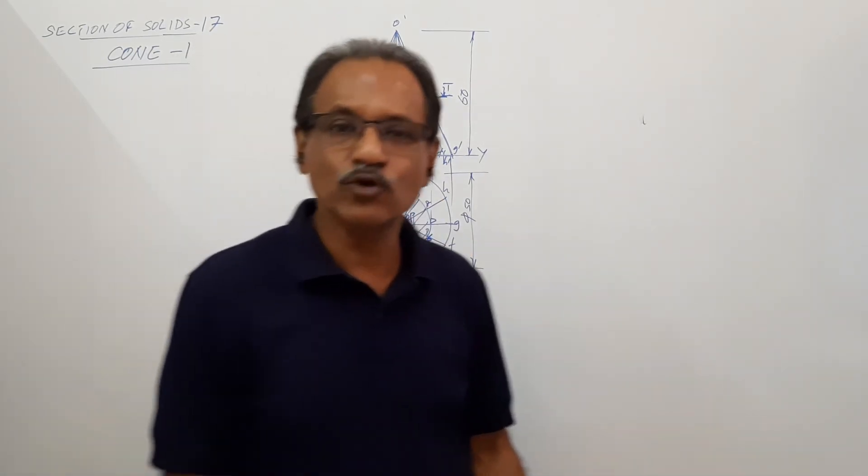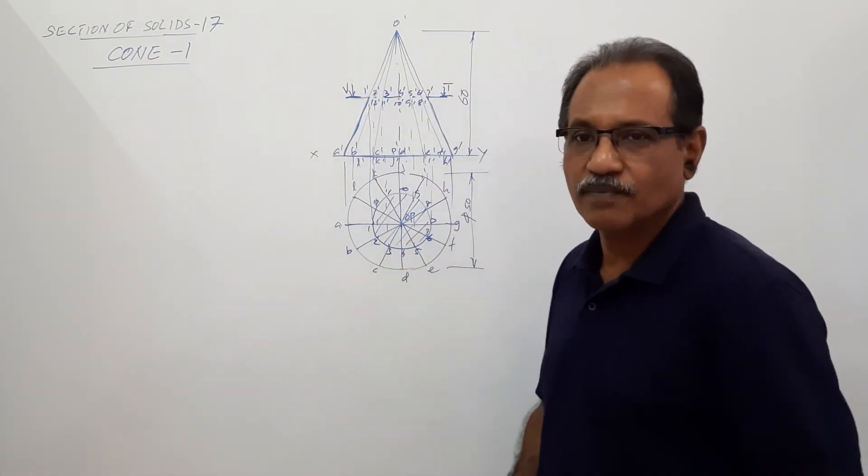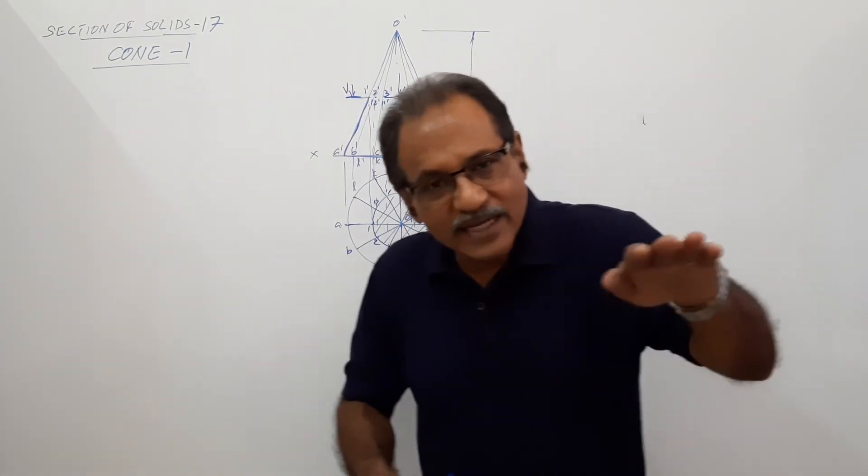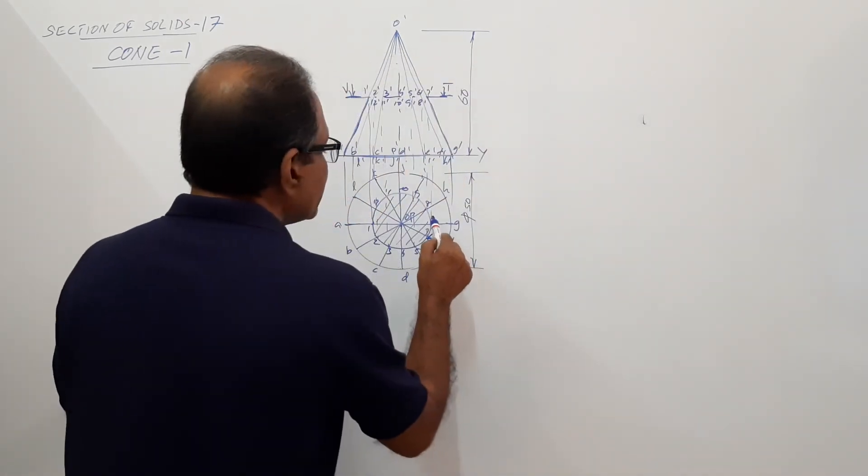So to ensure that you get a correct shape, you do reverse. Since the cutting plane is horizontal, the sectional plan itself gives true shape. What is this circle? This circle is true shape.